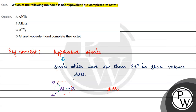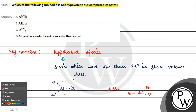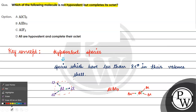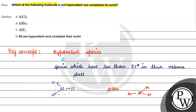If we talk about AlBr₃, the situation is the same. Aluminum has three electrons, and each bromine contributes one electron. AlBr₃ is also a hypovalent species.